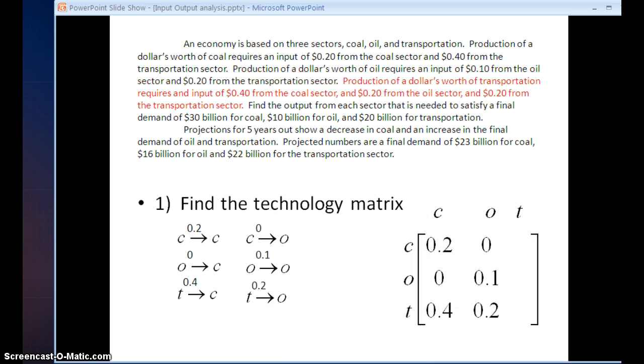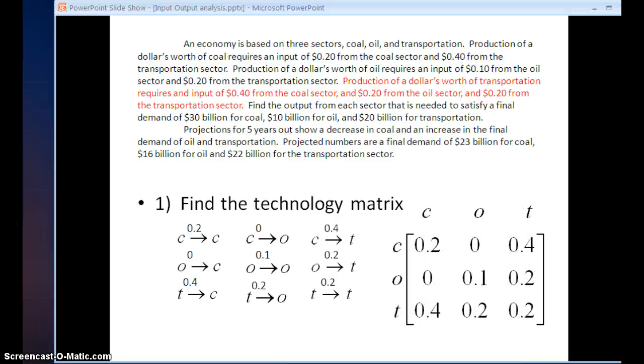Now I move to the fourth sentence. And this time I'm looking at the cost from coal, oil, and transportation on transportation. So again, I set up the arrows. And as I read through the sentence, I fill in the dollar amounts. So production of a dollar's worth of transportation is going to take 40 cents on the dollar from coal, 20 cents on the dollar from oil, and 20 cents on the dollar from transportation. Once again, I fill these numbers into the matrix. So there I've completed my technology matrix as my first step in solving this input-output analysis problem.